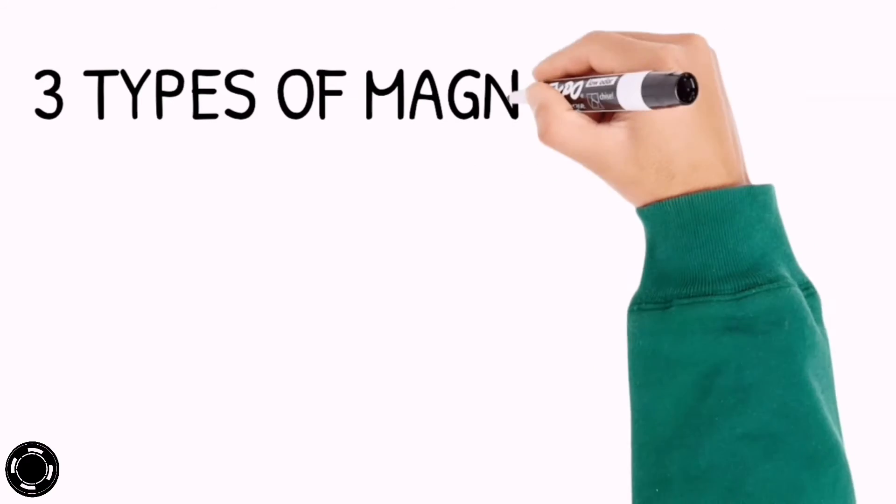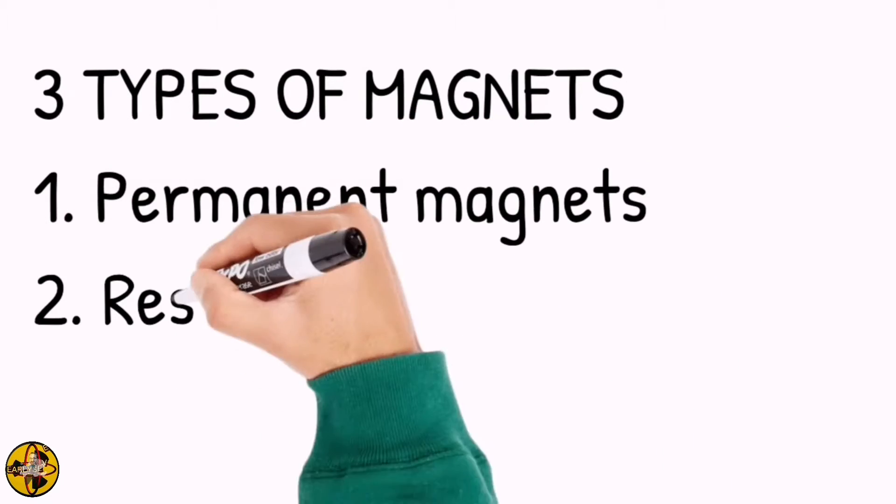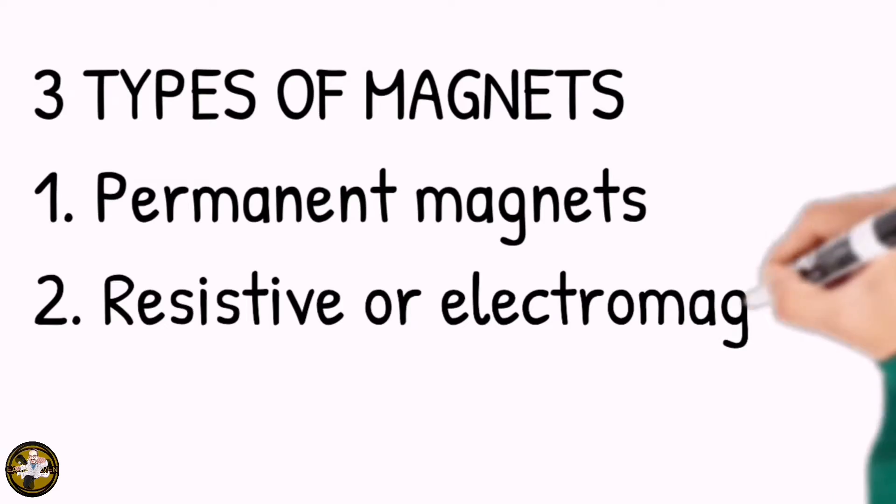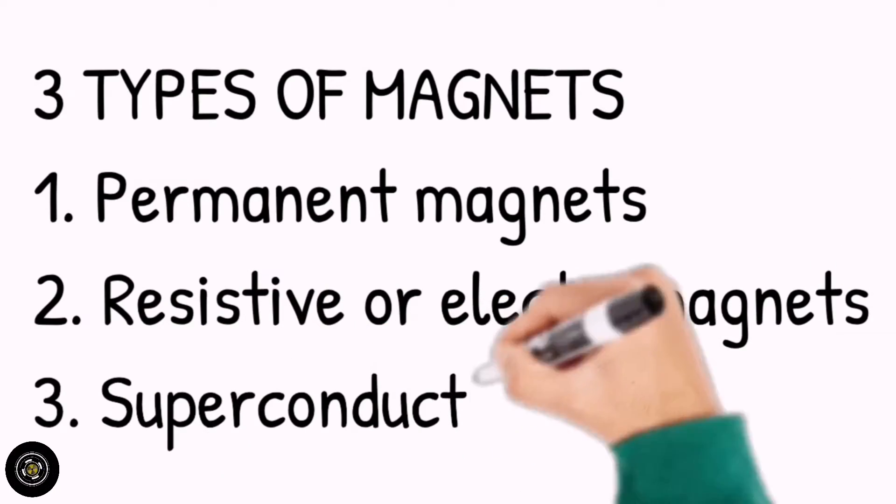There are three types of magnets used in MRI: the permanent magnets, the resistive or electromagnets, and the superconducting magnets.